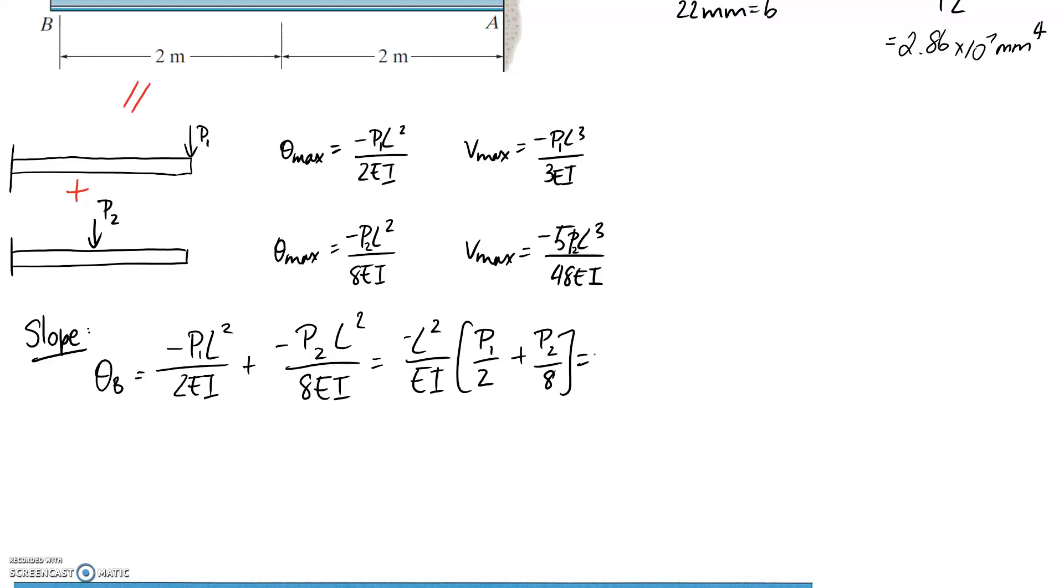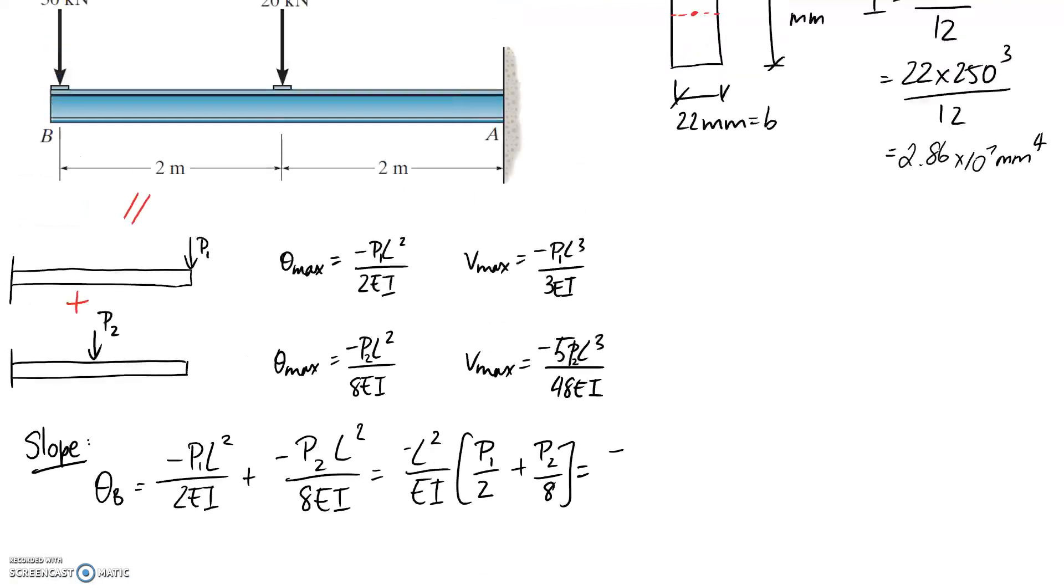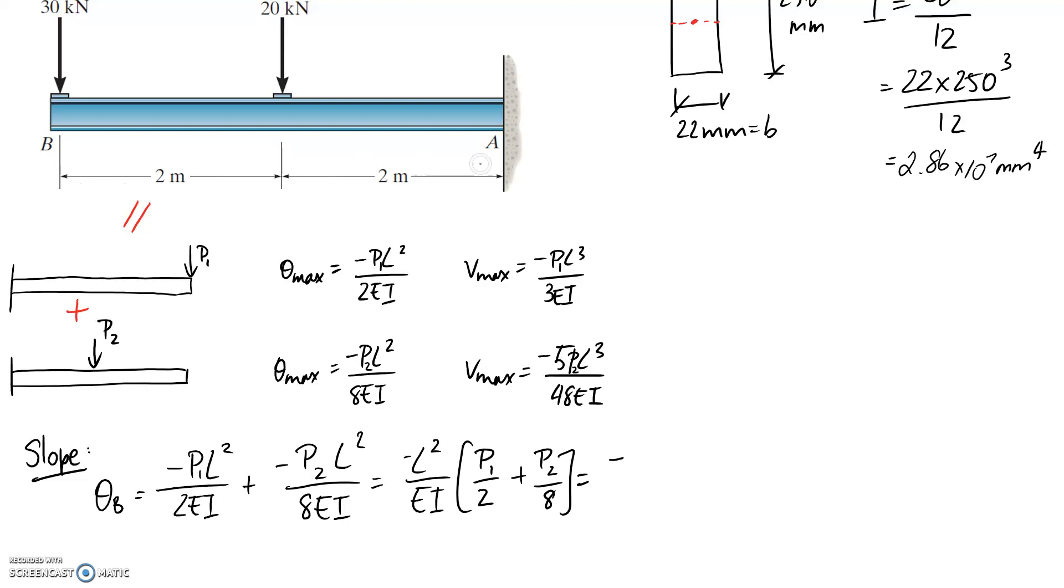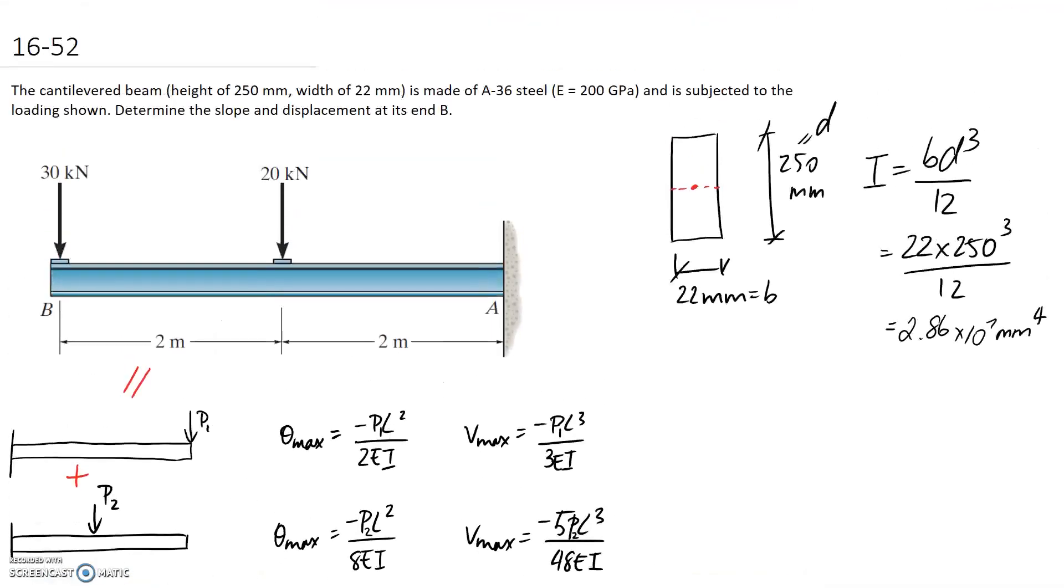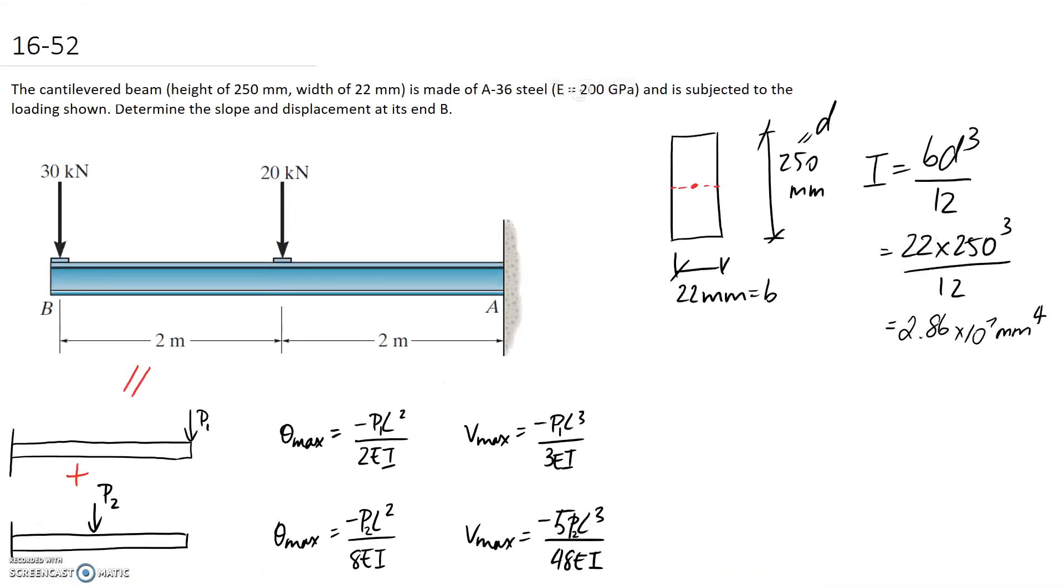Let's substitute in, so L is the length of the beam, and if we go back up you can see it's 2 plus 2 meters, so it's 4. E is the Young's modulus for the material, which we're given as 200 GPa.